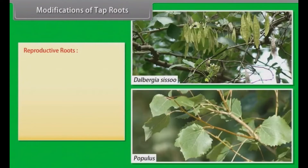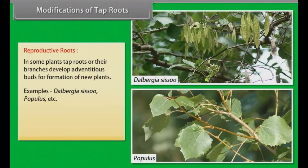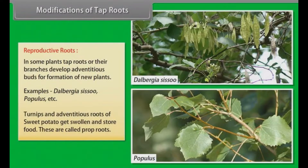Reproductive roots: In some plants, tap roots or their branches develop adventitious buds for formation of new plants. Examples: Dalbergia, Sisso, Populus, etc. Turnips and adventitious roots of sweet potato get swollen and store food. These are called prop roots.